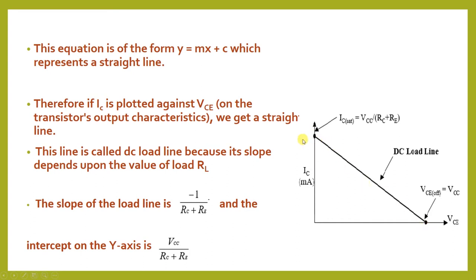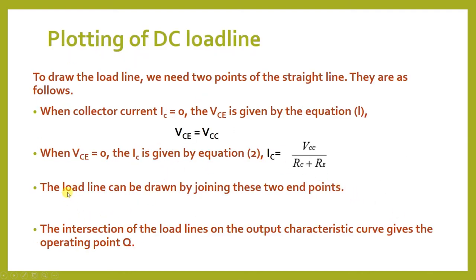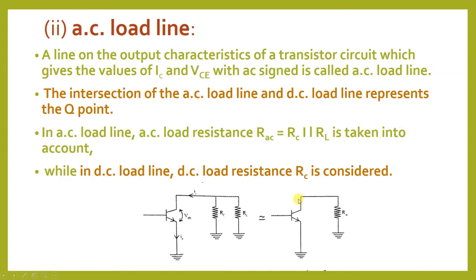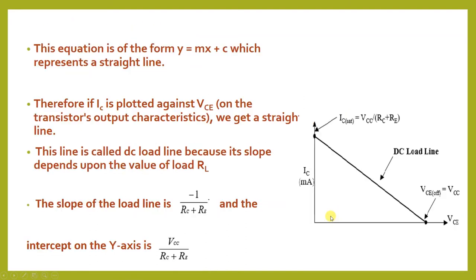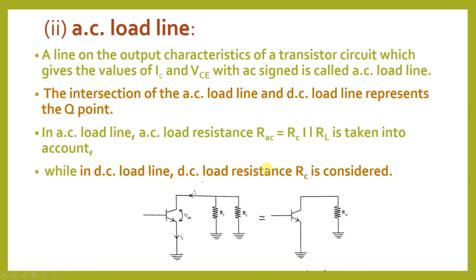The point on the Y-axis is called the saturation point and the point on the X-axis is called the cutoff point. The load line is drawn by joining these two points — VCE on the X-axis and IC on the Y-axis. The intersection of the load line with the output characteristic curve gives the operating point, or Q point.